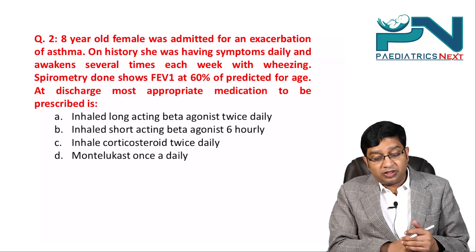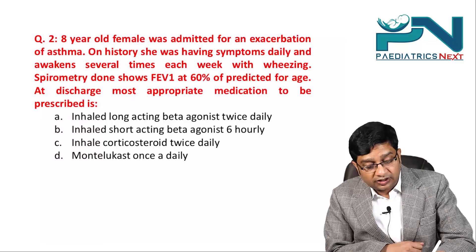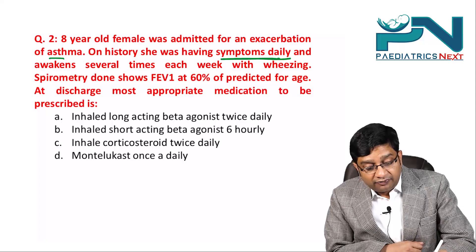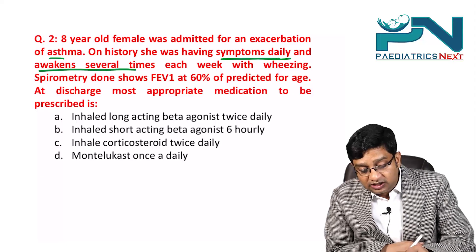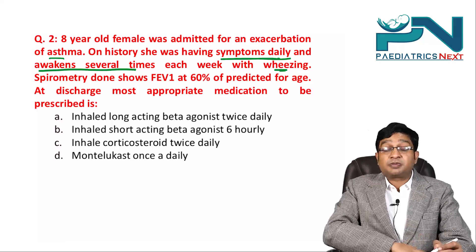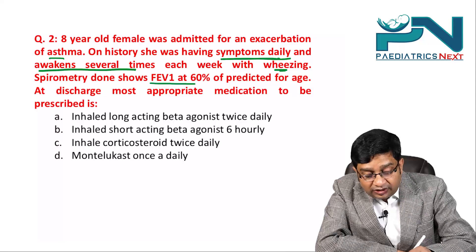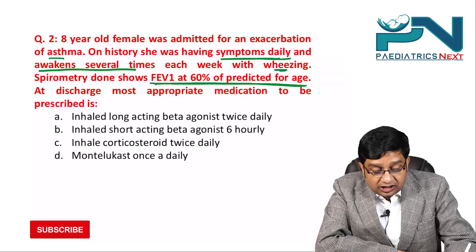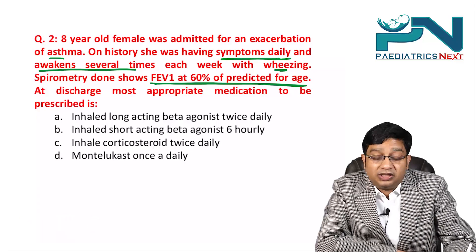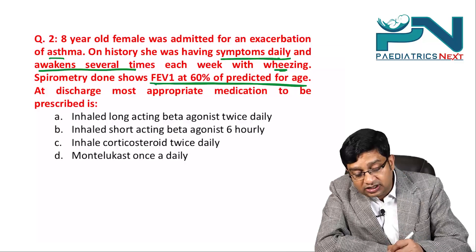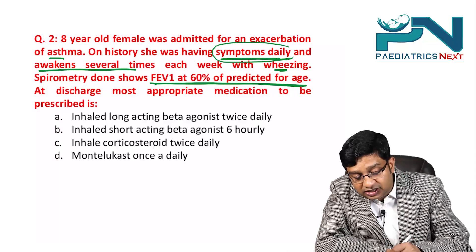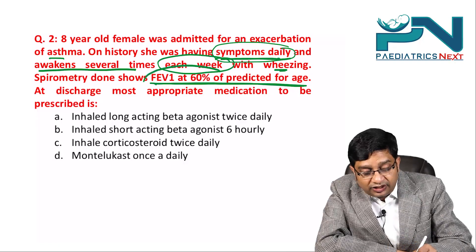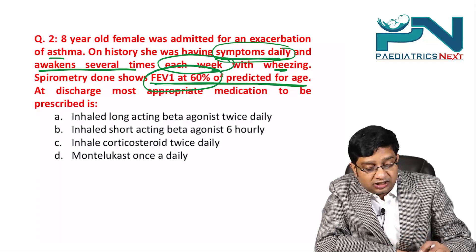Second question: An 8-year-old female was admitted for an exacerbation of asthma. She was having symptoms daily and awakened several times each week with wheezing. Spirometry shows FEV1 at 60% predicted for age. The most appropriate medication to prescribe at discharge is to be determined. We are given: daytime symptoms present daily, nighttime symptoms present every week, and FEV1 is 60%.